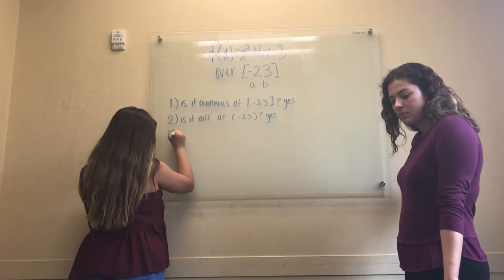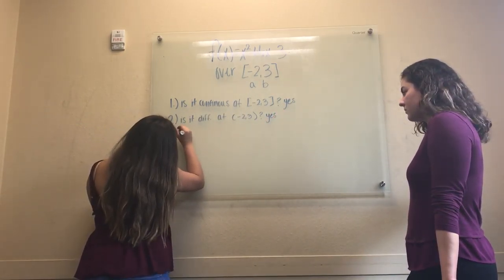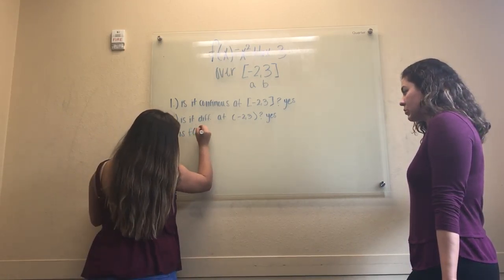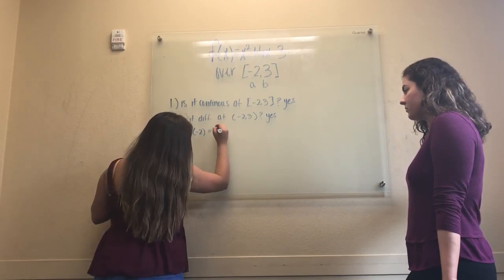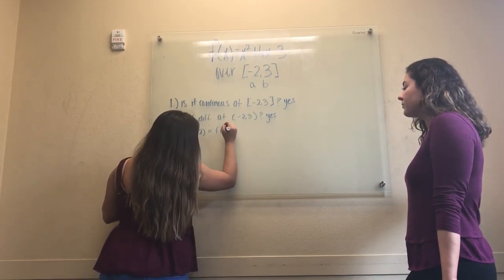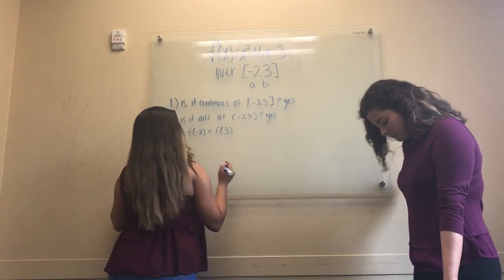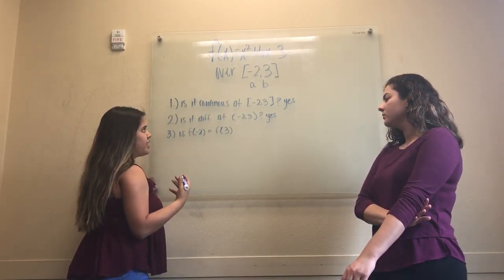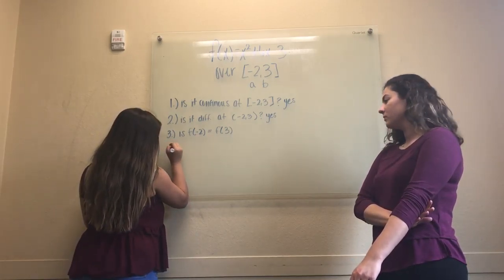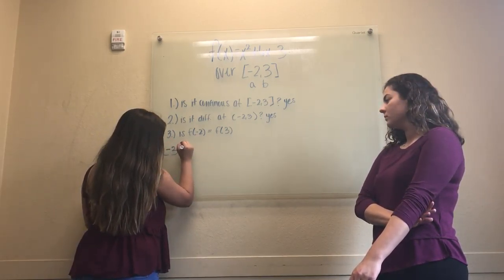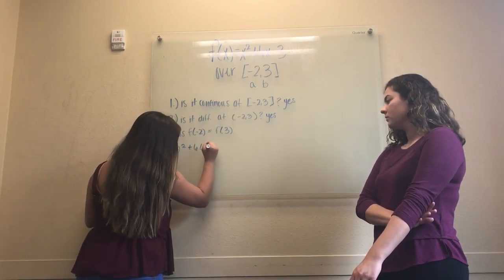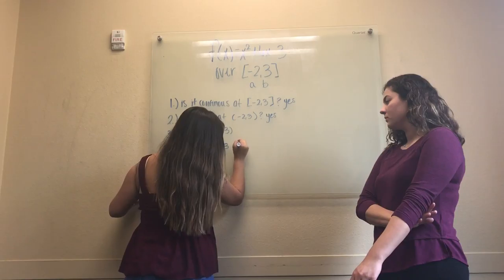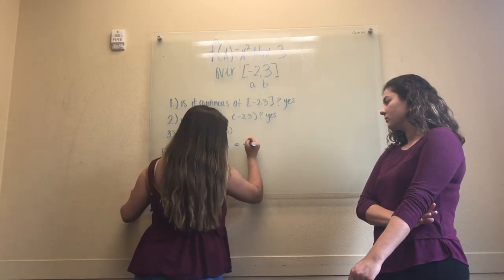Our third condition is, is f of a, in our case negative 2, equal to f of b, in our case 3? So for f of negative 2, we will be substituting negative 2 in all the x values. So it is negative 2 raised to 2 plus 6 times negative 2 minus 3. This equation is overall equal to negative 11.